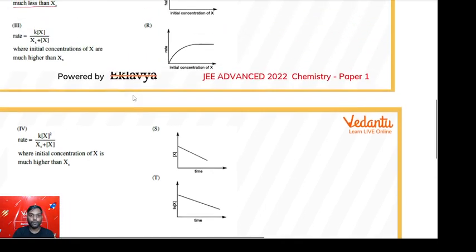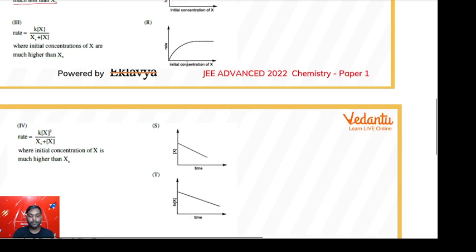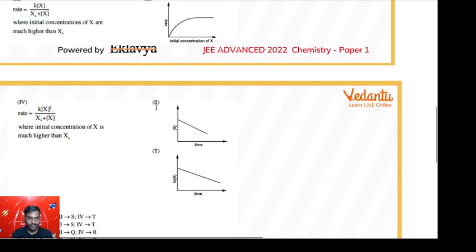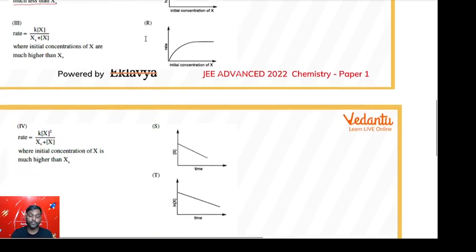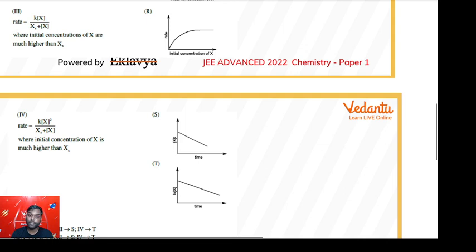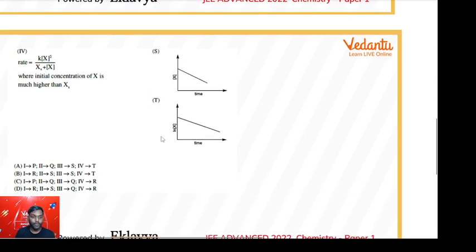For the second, they have used only Q and S. Q is possible but S is not correct for second because it's a first-order reaction, and for first order the concentration varies exponentially, not linearly—that's a property of zero-order reaction. So we can immediately rule out options B and D because in these two, second is matched with S, which is definitely incorrect.